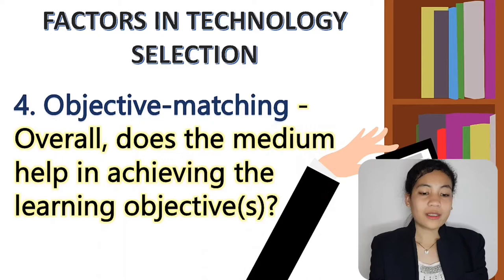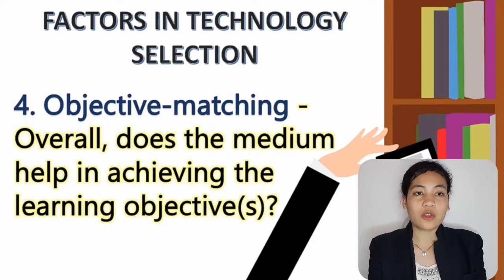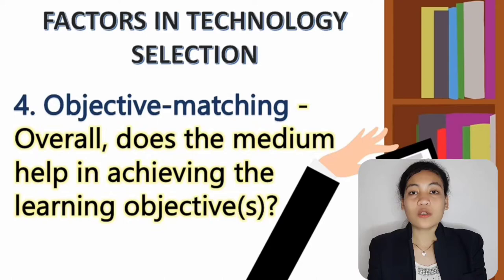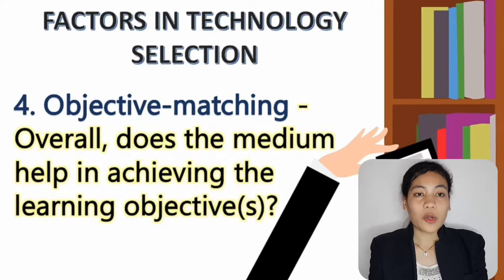The last factor is objective matching. Overall, does the medium help in achieving the learning objectives? This is the most important factor the teacher must consider when deciding what media or technology to use. The technology tool must be parallel to the learning objectives to attain our goals. For example, if the objective is to form a clear idea of something, use real objects or models; to encourage emotional response, use films or photos; to give visual access to something not physically accessible, use pictures, posters, or film.